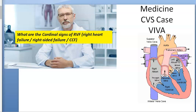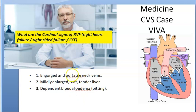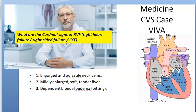What are the cardinal signs of right-sided heart failure? The cardinal signs of right-sided heart failure or congestive cardiac failure will be: engorged and pulsatile neck veins, the liver will be soft and large and tender, and there will be bilateral pitting edema. These are the cardinal signs of heart failure.